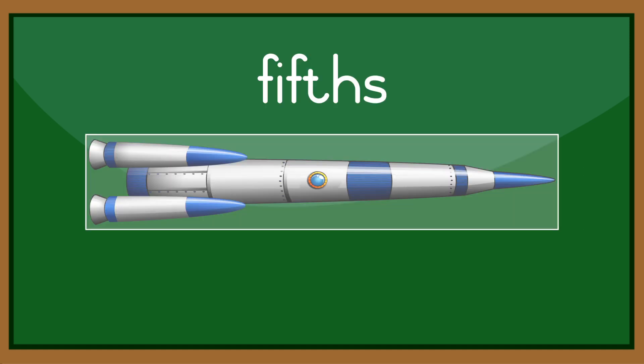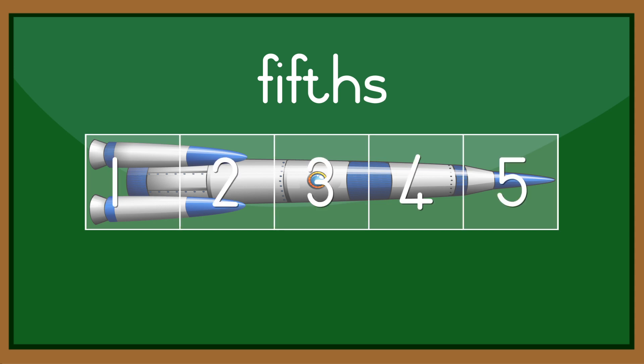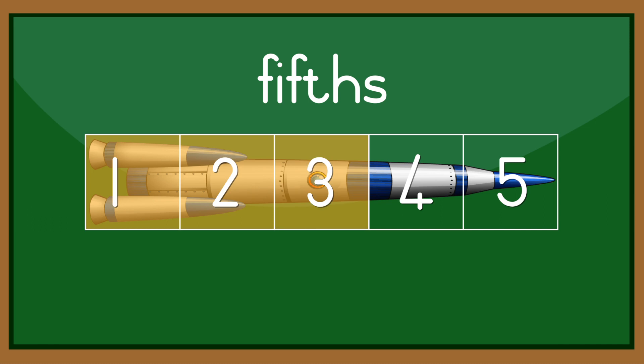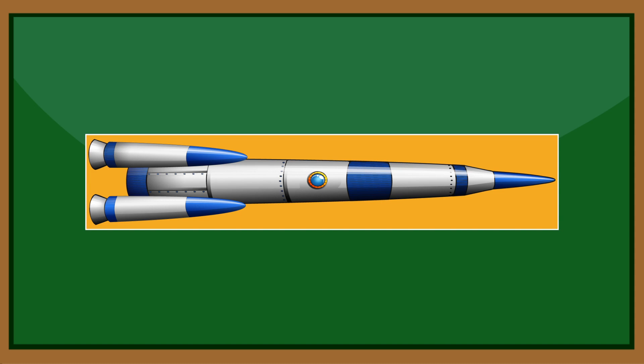In this example, the whole is divided into five parts. Those parts are called fifths. One fifth, two fifths, three fifths, four fifths, five fifths, which equal a whole.